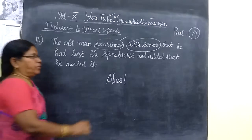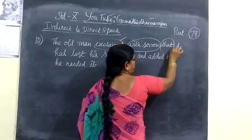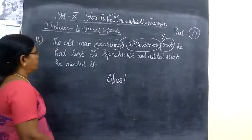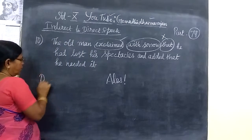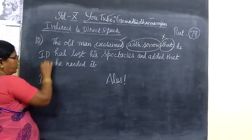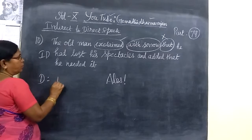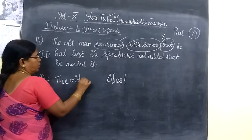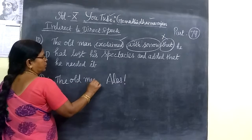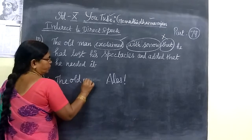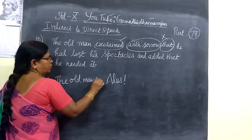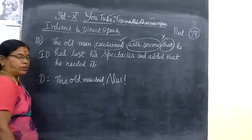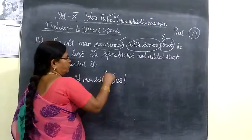The condition word 'that' is present — remove it. You are removing the conjunction. So in the beginning, since this is indirect and you are going to change it into direct, you write: 'The old man exclaimed' — change 'exclaimed' and write 'said'. Then put the inverted comma.